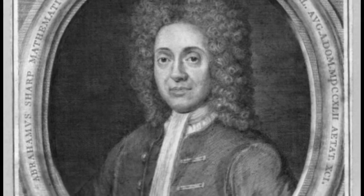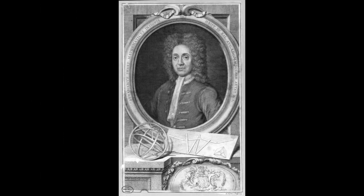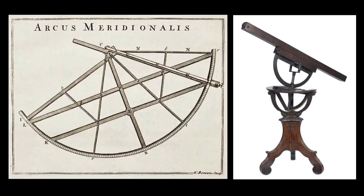Abraham Sharpe was a scientific instrument maker and mathematician who loved making things and doing long, hard calculations. He's most famous for his very precise astronomical and scientific instruments like these, which are preserved in some museums, and for calculating the decimal value of pi to over 70 places.